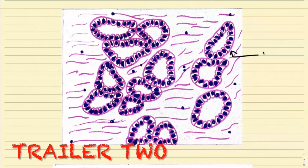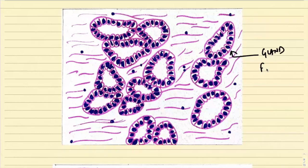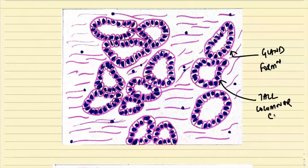These are actually showing gland formation. The individual cells, if you look, are tall columnar cells.